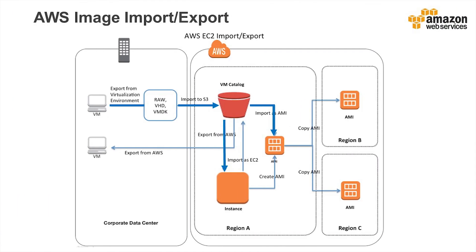Now let's take a look at the AWS image import-export process. As we can see from this diagram, in the data center on-premise, a VM is first exported from the virtualization environment to an image in the format of RAW, VHD, or VMDK. The image is then imported to AWS S3. Next, the migrated image is either converted to an AMI image or turned into an EC2 instance. The AMI image can be further copied to other regions.